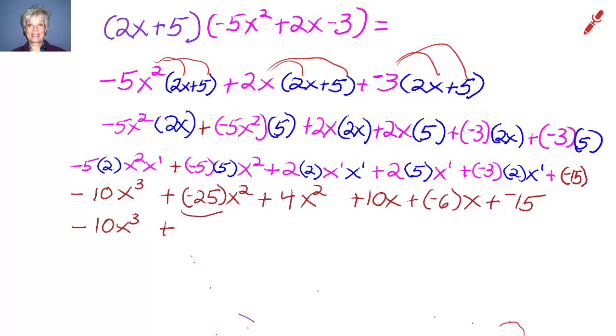So -10x³ leads off because it's the highest power. Then we combine -25x² and 4x². That will give us -21x².